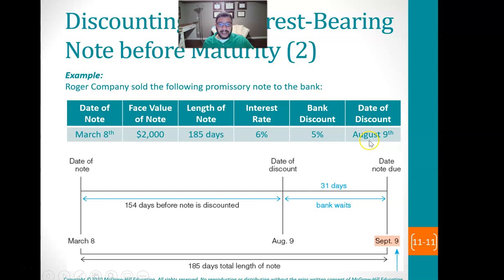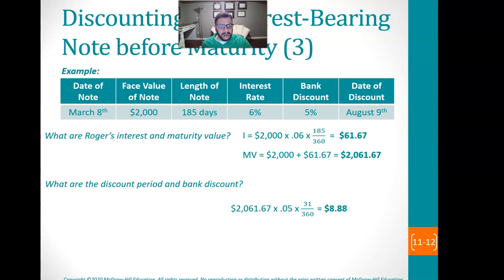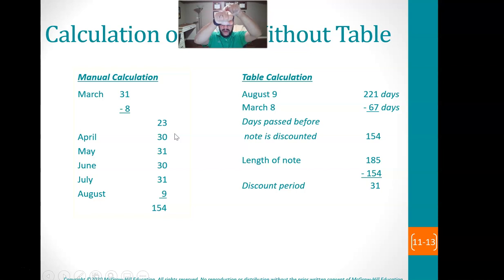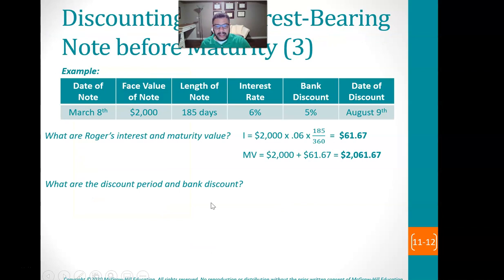The first thing to do is figure out how many days it is between March 8th and August 9th. Using the table in the book, you get 221 days for August 9th and 67 for March 8th, so you subtract those and come up with 154 days. Or you can just count the days: there are 23 days left in March, then 30, 31, 30, 31 for the following months, and then 9 days in August. When you add this up, it's 154 days.